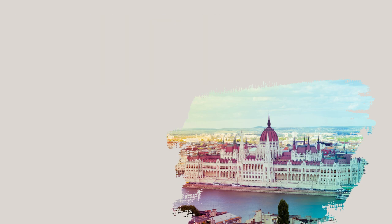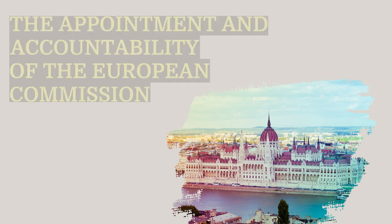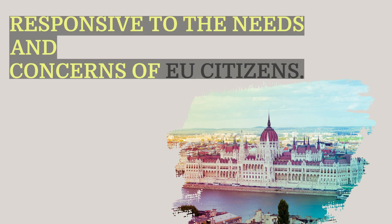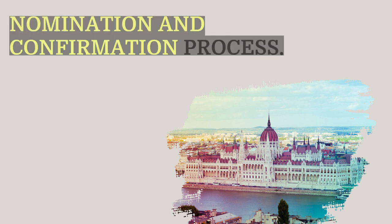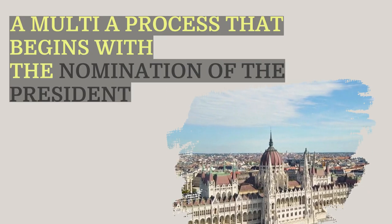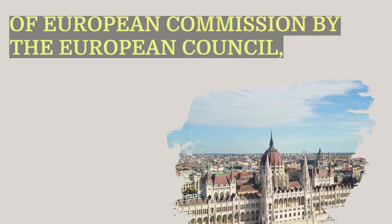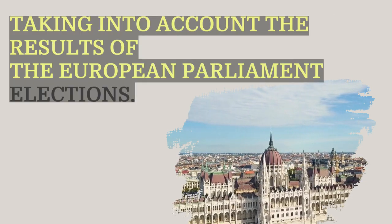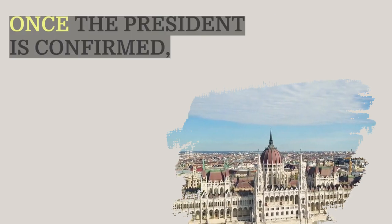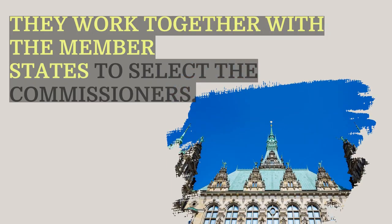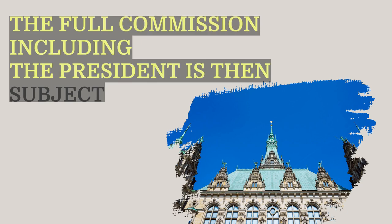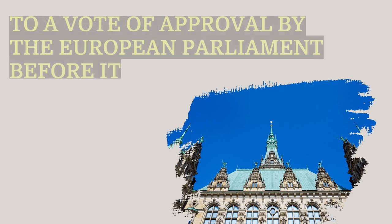The appointment and accountability of the European Commission are crucial to ensuring it operates effectively. The nomination of the President begins with the European Council, taking into account the results of the European Parliament elections. The nominated candidate must then be approved by the European Parliament. Once the President is confirmed, they work together with the member states to select the commissioners. The full Commission, including the President, is then subject to a vote of approval by the European Parliament before it can officially begin its term.